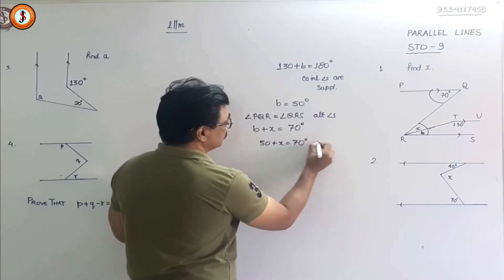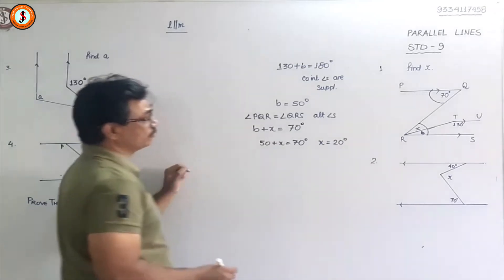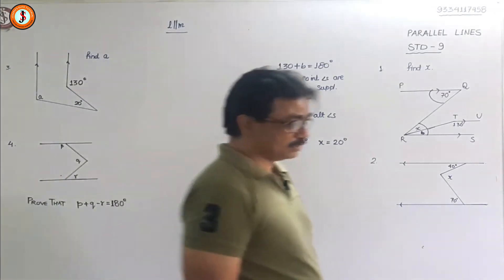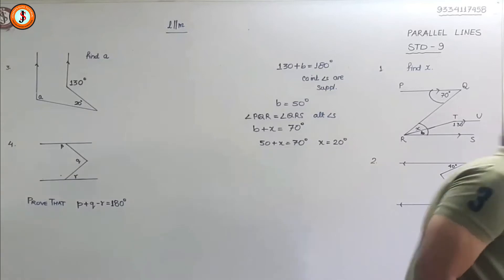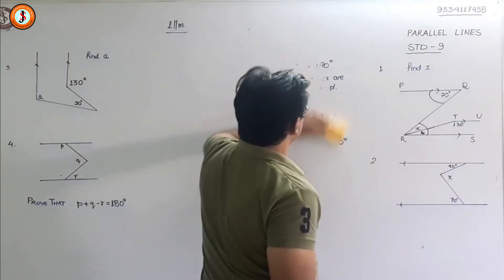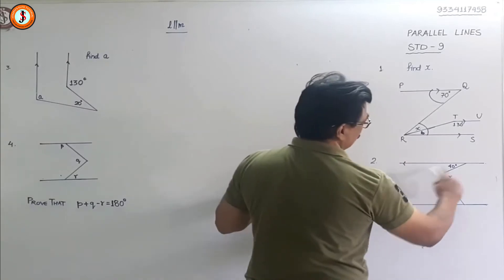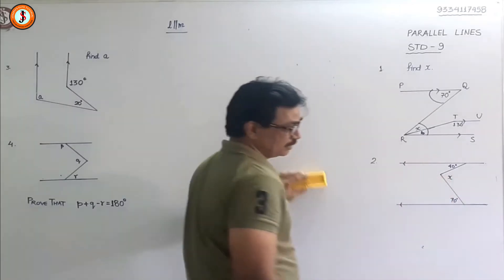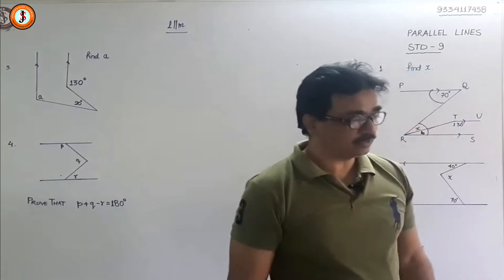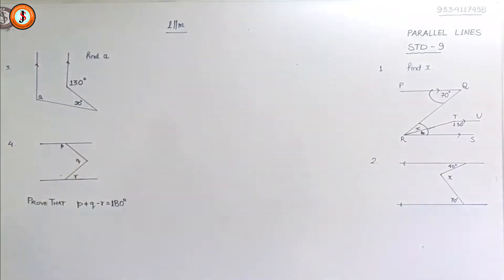That means x is equal to 20 degrees. We are finished with the first question. Now the second question requires a little bit of common sense. They are telling us to find x. Either this way or this way we can find x, but by doing a little bit of construction.